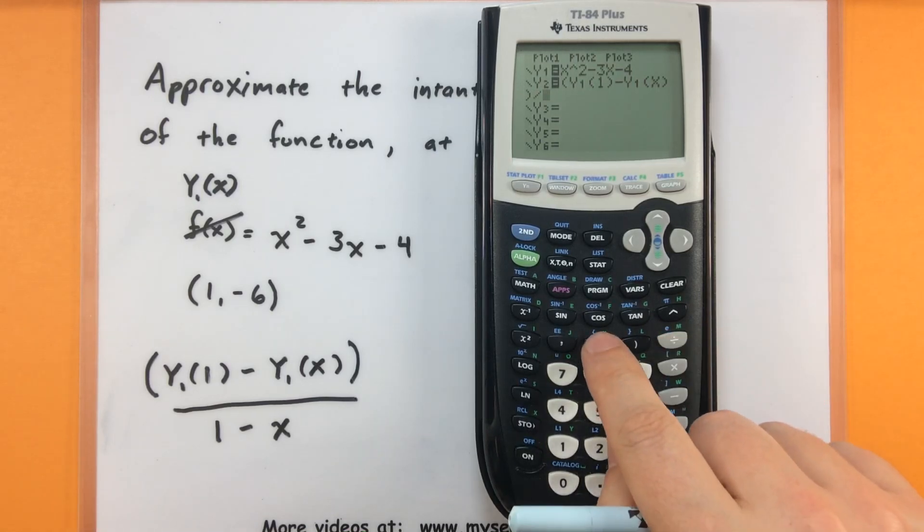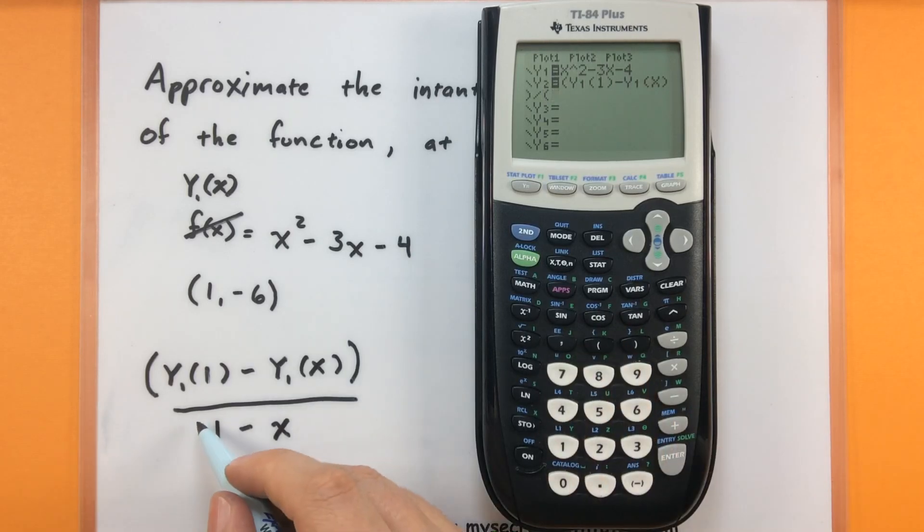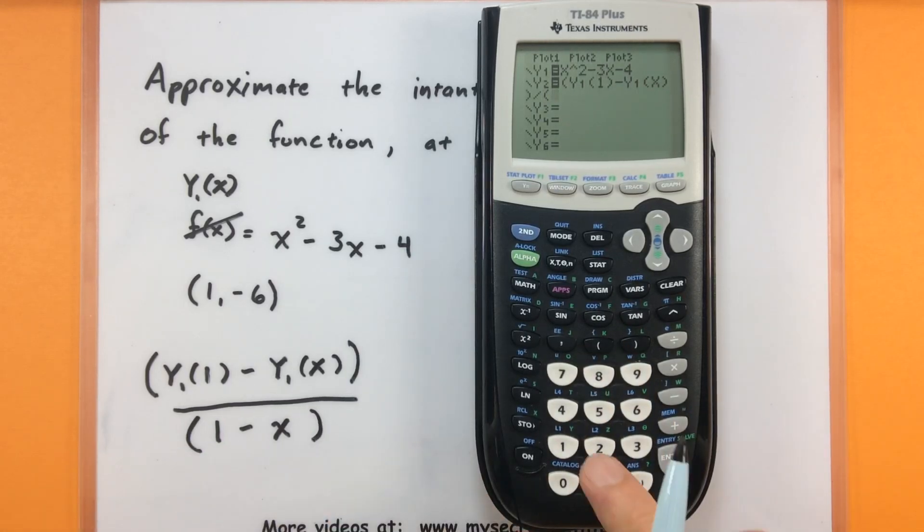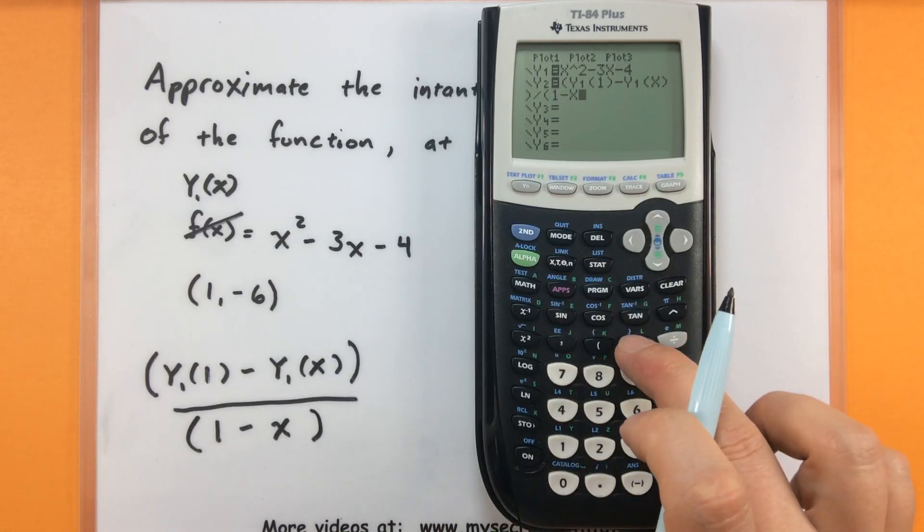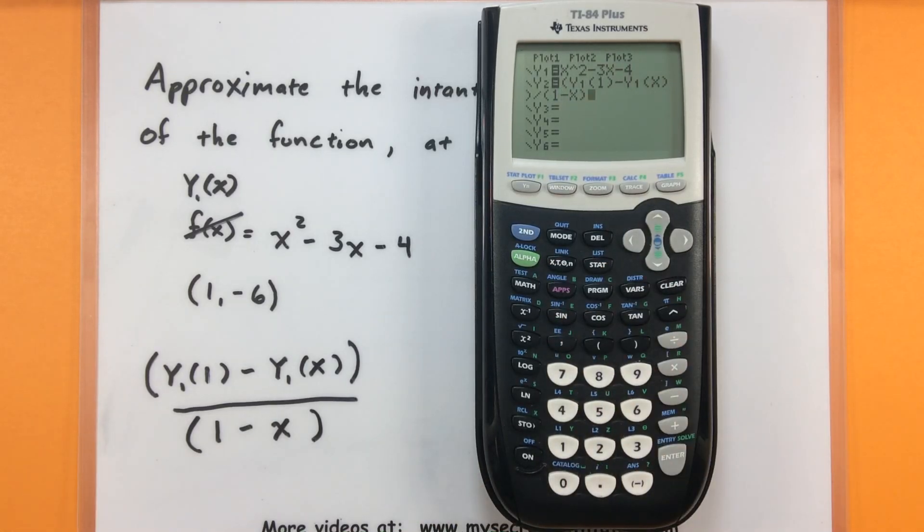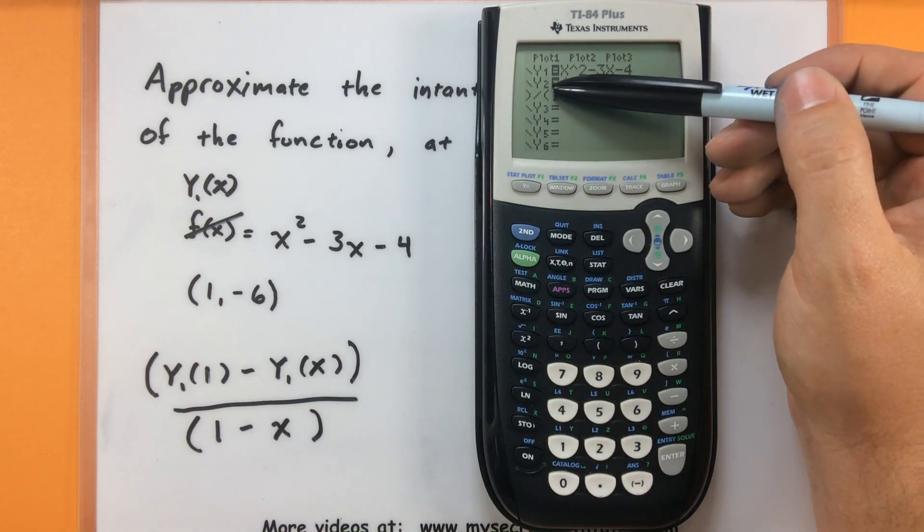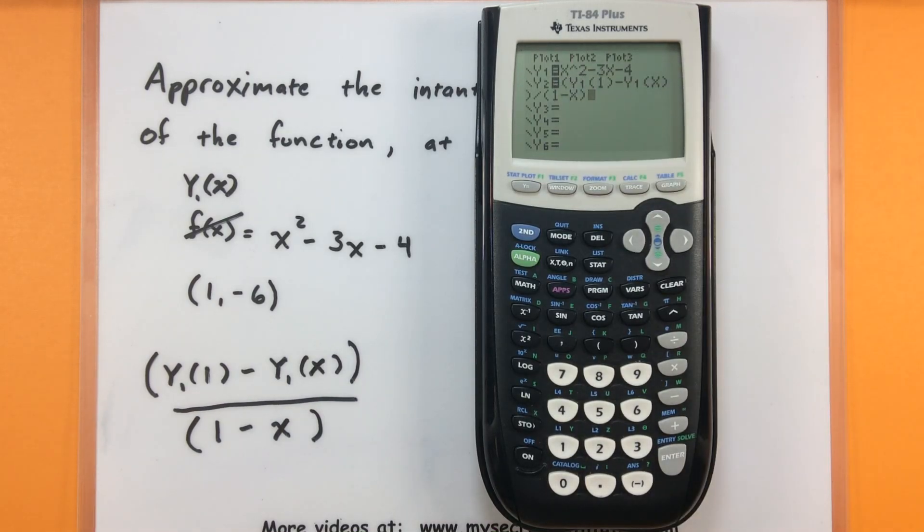Now divided by. Let's go ahead and open up another set of parentheses for the bottom here. We'll have 1 minus x. Close parentheses. So we've programmed in this nice slope formula. We've programmed it in as y2. And now we can feed it in different values and see what we get.